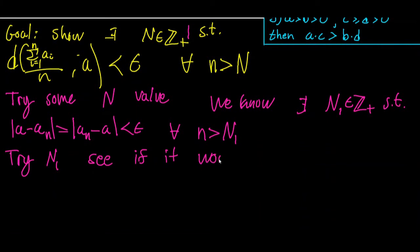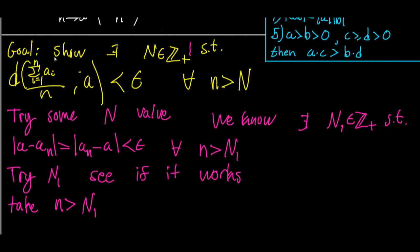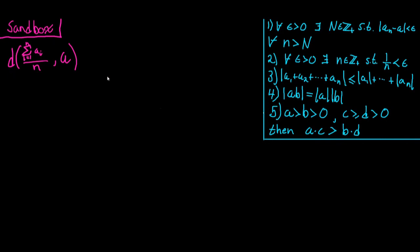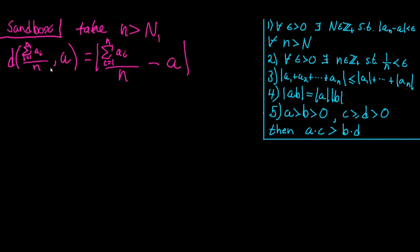Let's go to our sandbox and play around with this distance. We want to leverage the property that the absolute value of aₙ minus a is strictly less than epsilon. The distance is the absolute value of the sum from i equals 1 to n of aᵢ over n, minus a. Expanding out the sum gives the absolute value of a₁ plus a₂ plus and so on up to aₙ, all over n, minus a.